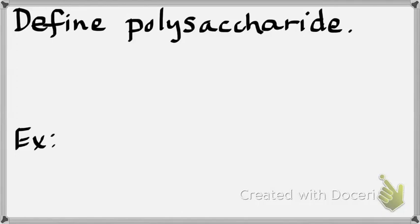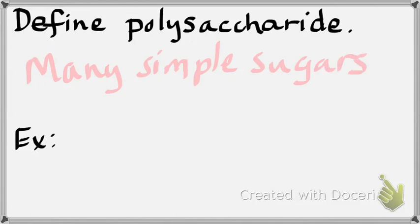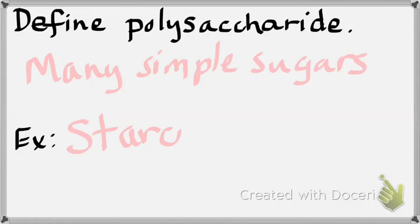What about a polysaccharide? Poly means many — many simple sugars connected to each other via covalent bonds. A great example of a polysaccharide is starch. Another one is cellulose — on page 29.